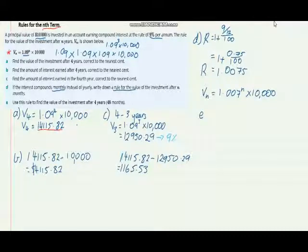And we need to write that as a rule. We cannot leave it just as, sometimes we forget to complete the question. So for the rule in terms of the month, Vn would be equal to 1.0075 to the power of n multiplied by 10,000.